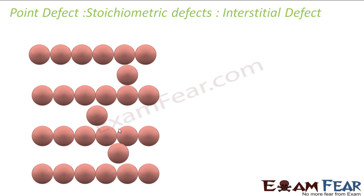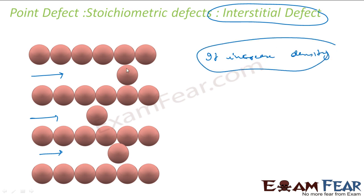The next is interstitial defect. In this, extra interstitial positions, some atoms come and stay there. The definition is: when the constituent particles, some of the constituent particles, occupy the interstitial sites, these are called interstitial sites. The space, the void in the question, is called interstitial site. So when some of the constituent particles occupy the interstitial site, it is called interstitial defect. In fact, it will increase the density. In the same unit cell, these are extra, it will add mass to the system. Since it adds mass to the system, density is mass by volume. Volume is constant, mass is increasing, that means the density has to increase. It is also shown by non-ionic only.